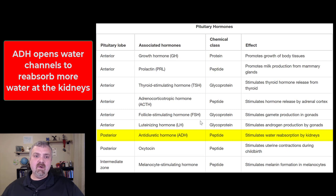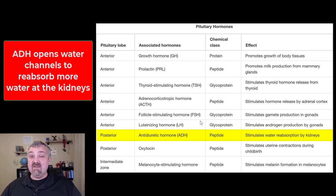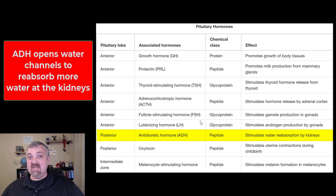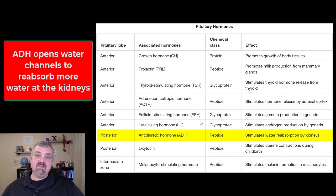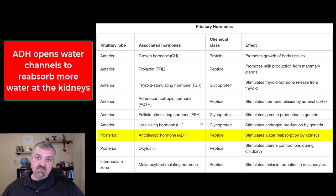Next we have antidiuretic hormone, a posterior pituitary hormone. Both ADH and oxytocin are secreted from the posterior pituitary gland, but they're actually produced by the hypothalamus. Antidiuretic hormone, like the name implies, is an antidiuretic — it opens aquaporin water channels in the kidneys, which leads to increased reabsorption of water, so you produce less urine.